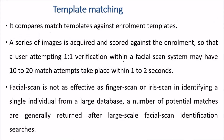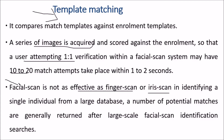In template matching, match templates are compared against enrollment templates. A series of images is acquired and scored against the enrollment template, so a user attempting verification within a facial scan system may have 10 to 20 match attempts taking place within one to two seconds. Facial scan is not as effective as finger scan or iris scan, but it is a strong technology for identifying a single individual from a large database, and a number of potential matches are generally returned after large-scale searches.